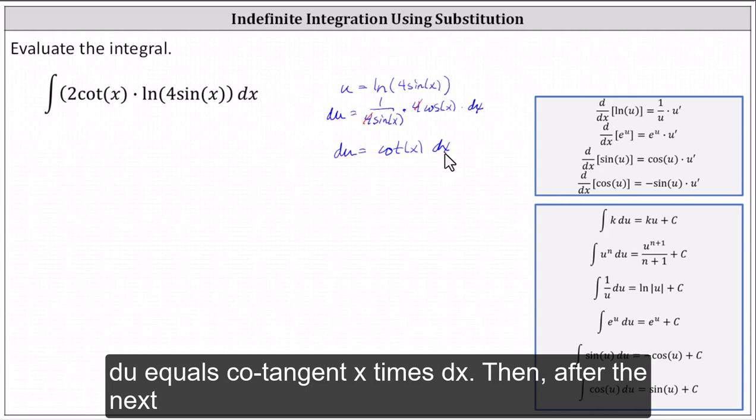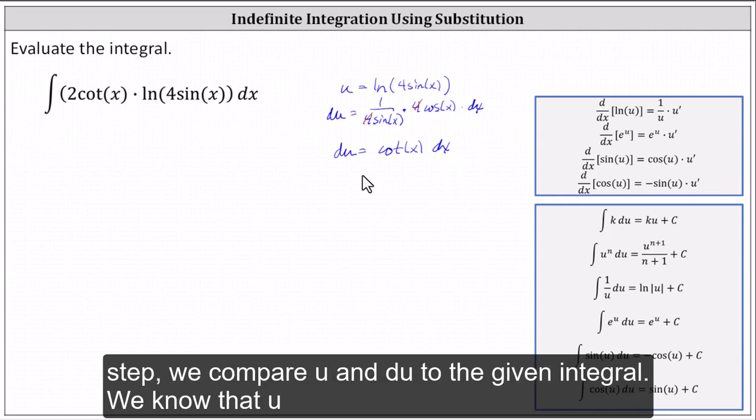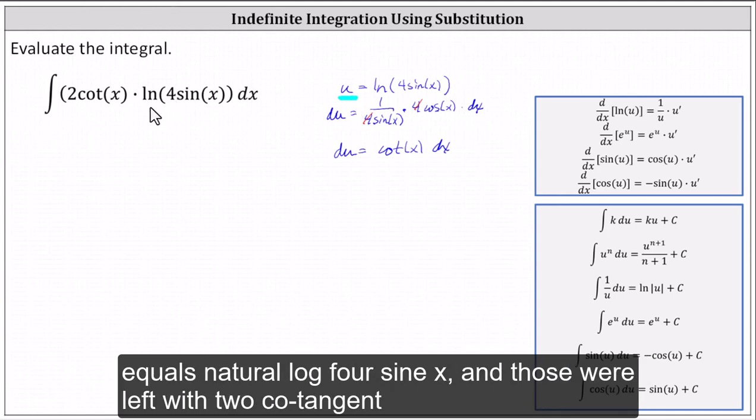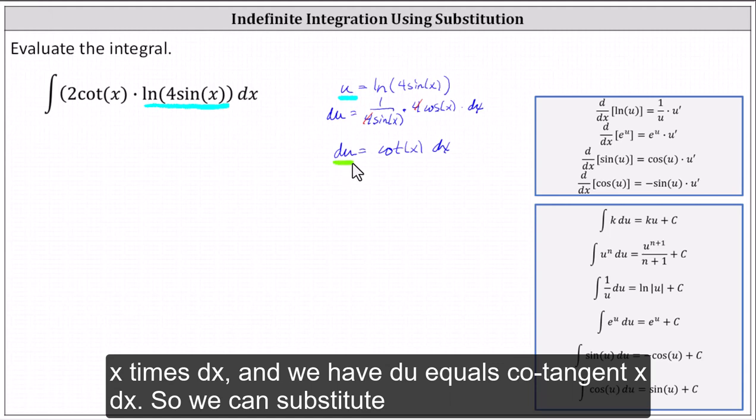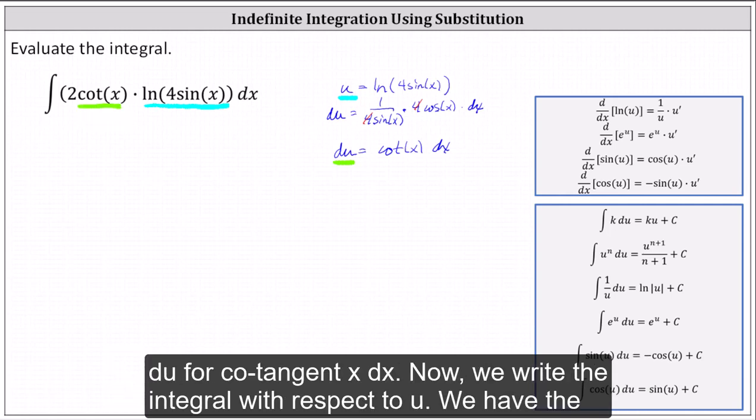And now for the next step, we compare u and du to the given integral. We know that u equals natural log four sine x equals u. Notice we're left with two cotangent x times dx, and we have du equals cotangent x dx. So we can substitute du for cotangent x dx.